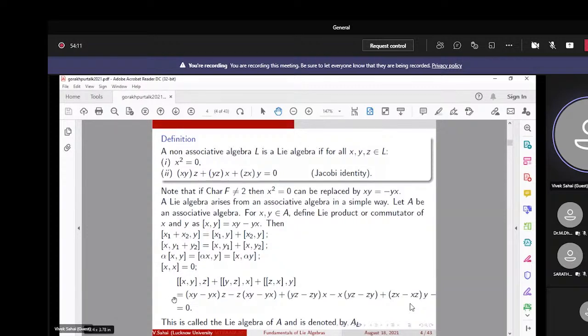This is the commutator of [x,y] with z, so [x,y] = xy - yx, and so this with z means (xy - yx)z - z(xy - yx). And two more commutators open like this. The third, the last term, is not visible, and that is -y(zx - xz). Now look here, this xyz...